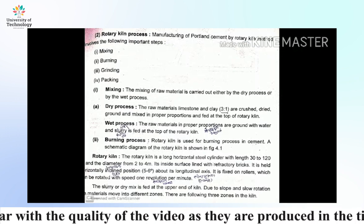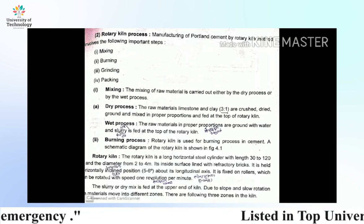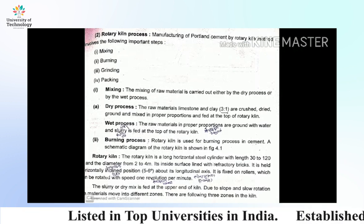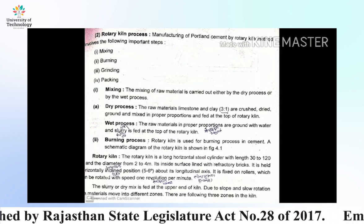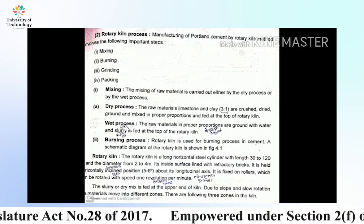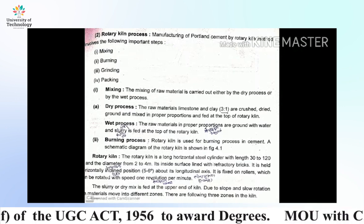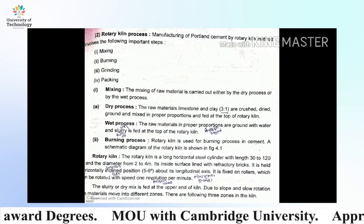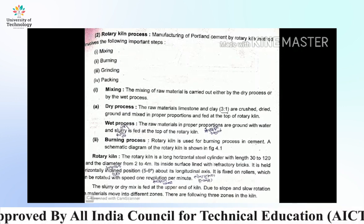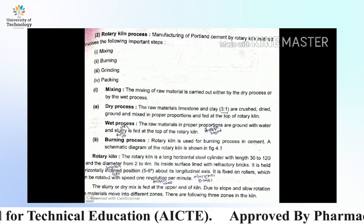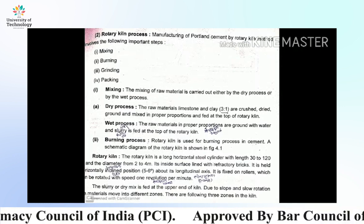Burning: the rotary kiln is used for the burning process in cement manufacturing. The rotary kiln is a long horizontal steel cylinder, 30 to 120 meters in length and 2 to 4 meters in diameter. The inside surface is lined with refractory bricks. It is held in a horizontal inclined position at 5 to 6 degrees above the longitudinal axis, fixed on rollers which rotate at a speed of about one revolution per minute. The slurry or dry mix is fed at the upper end of the kiln, and due to the slope and slow rotation, the material moves through different zones.